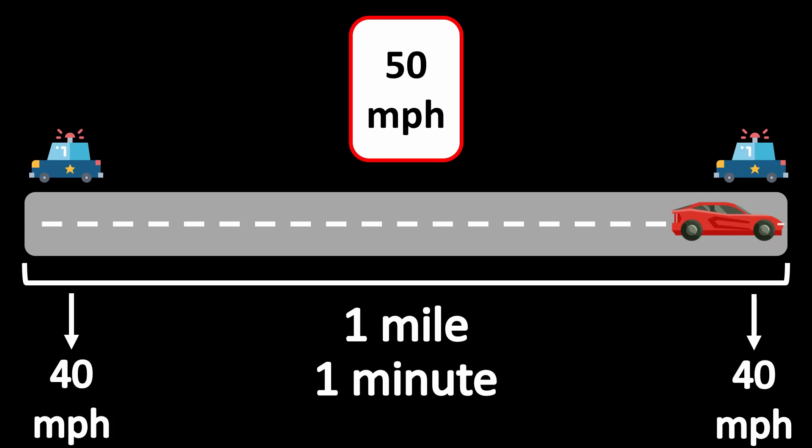Despite all of this, the cop at the end of the highway stops you and gives you a speeding ticket. How is this possible?